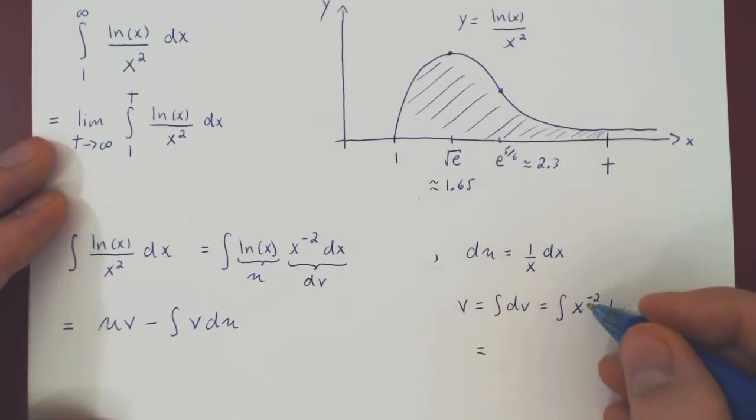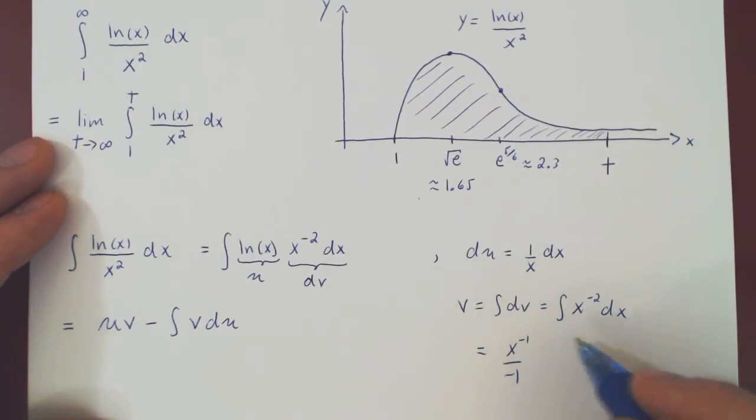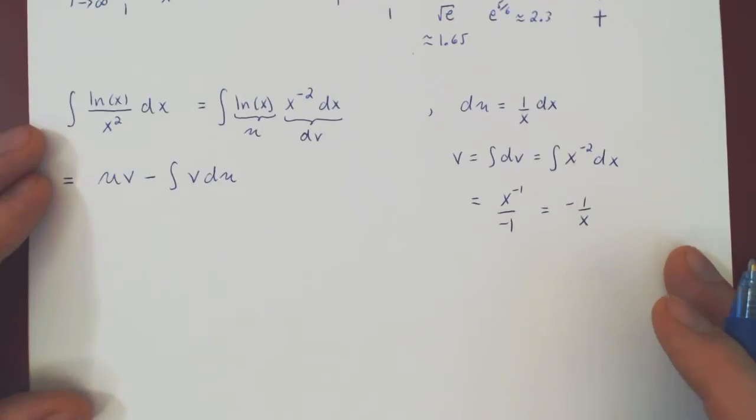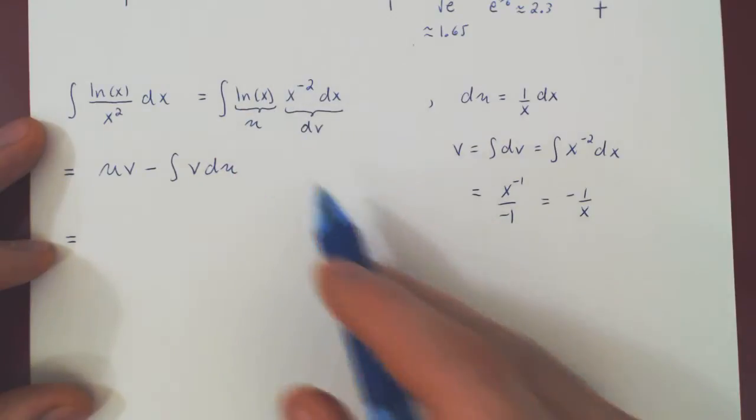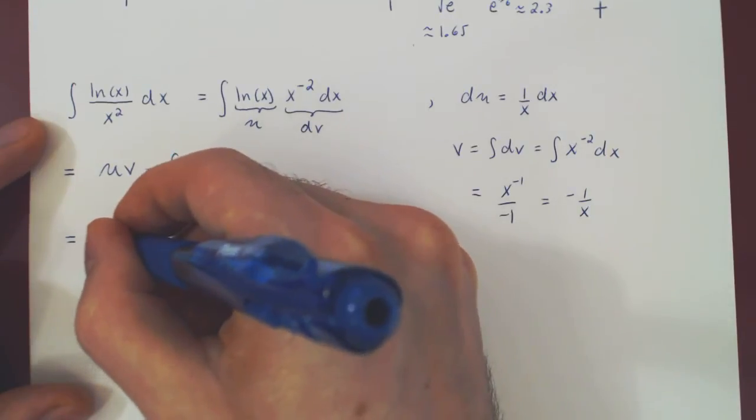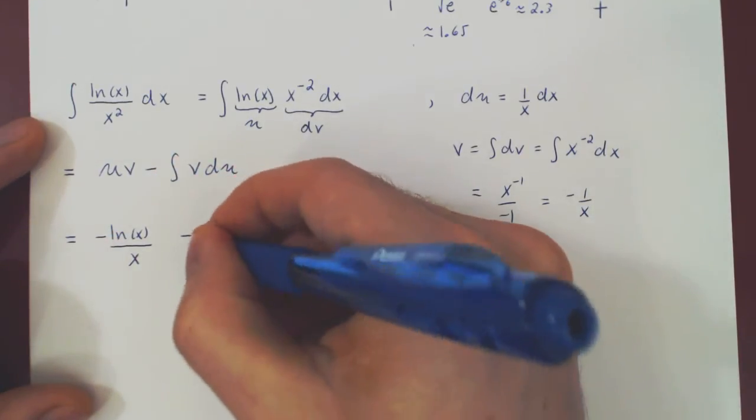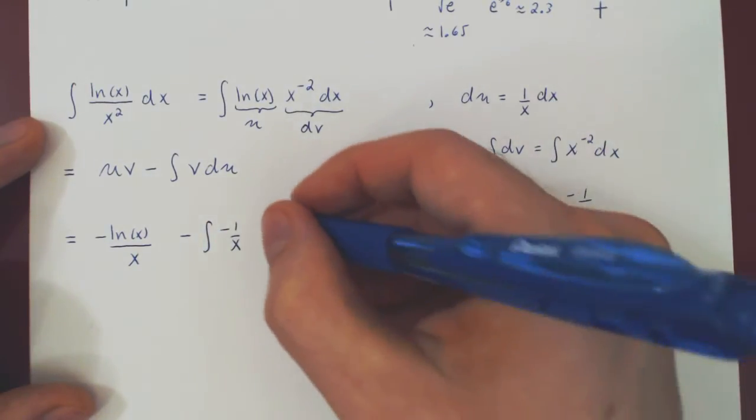And recall, when you apply integration by parts and you find your v, you do not need to add the constant of integration. If we simplify, this will give us negative 1 over x. Now we're good to go. We have our v and our du. So let's see. uv is ln of x times negative 1 over x, so that's negative ln of x over x. Minus the integral of v, negative 1 over x, times du, 1 over x dx.